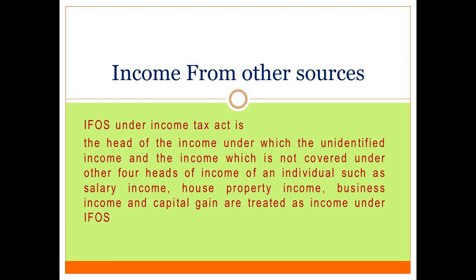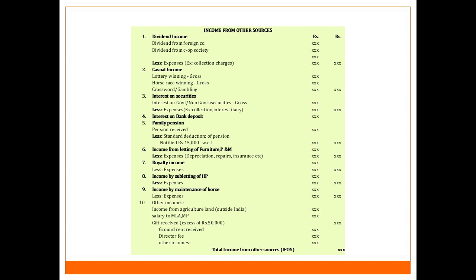Income from other sources — IFOS under Income Tax Act is the head of income under which the unidentified income and the income which is not covered under the other four heads of income, such as salary income, house property income, business income, and capital gain, are treated as income under IFOS. Here is the format for computation of income from other sources, and the remaining slides will tell you what incomes will come under IFOS and how they should be treated as taxable income.